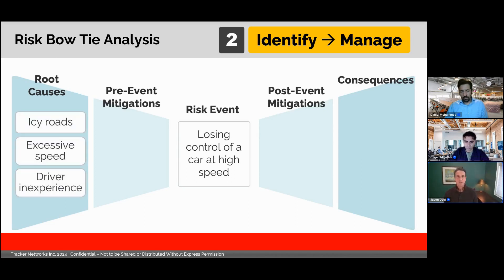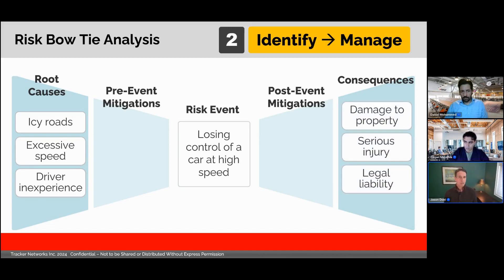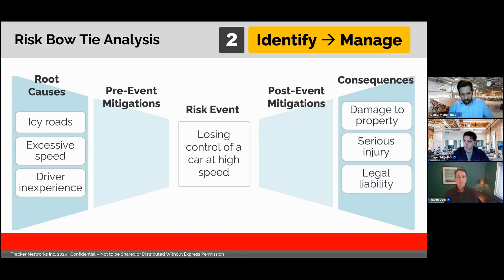In my example, I could identify a number of potential root causes. The roads might be icy or wet, maybe the driver is going too fast, or maybe the driver is inexperienced. Similarly, I can identify and map the potential consequences if the risk event occurs — there may be damage to property, serious injuries, and legal liability.